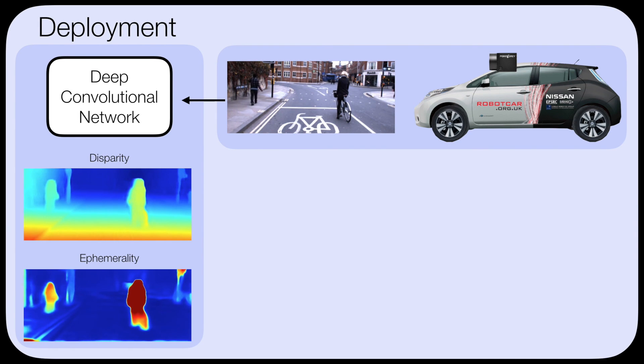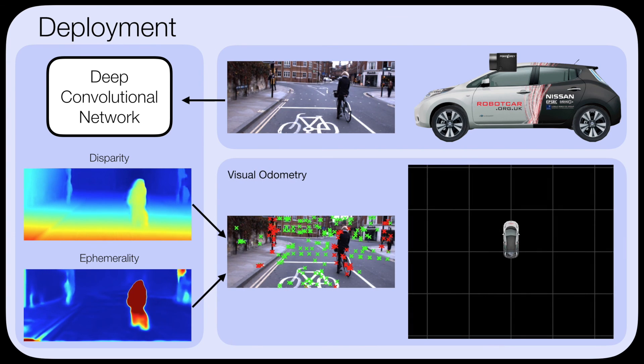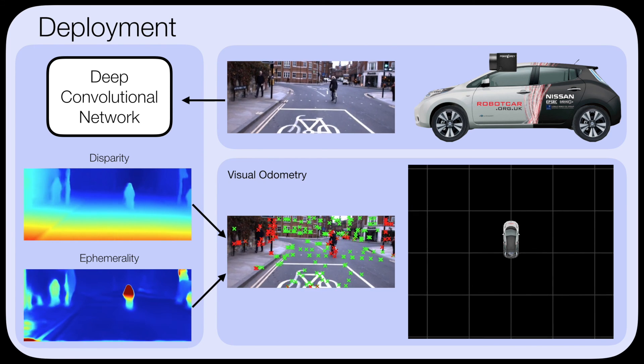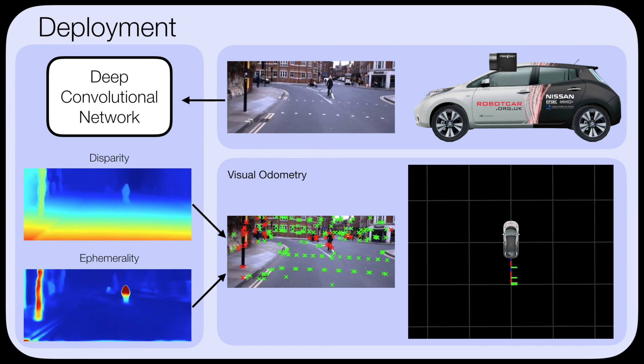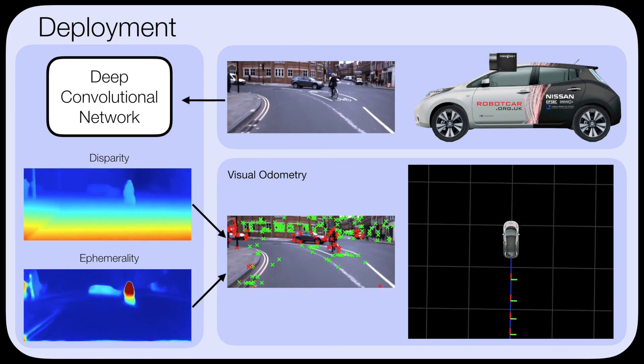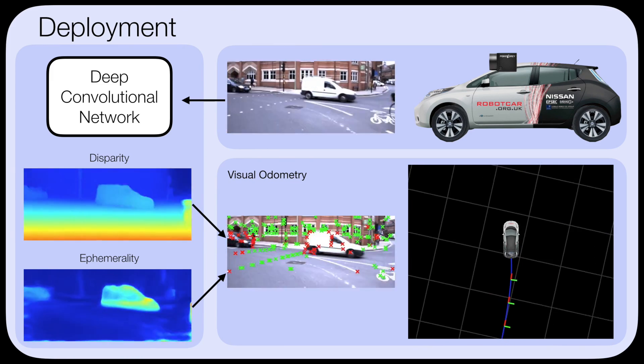At runtime we use a vehicle only equipped with a monocular camera and produce live disparity and ephemerality masks. These outputs are fed to a sparse or dense visual odometry system. The disparity prediction gives our pose estimates the correct metric scale and the ephemerality masks enable robustness to distractor objects.